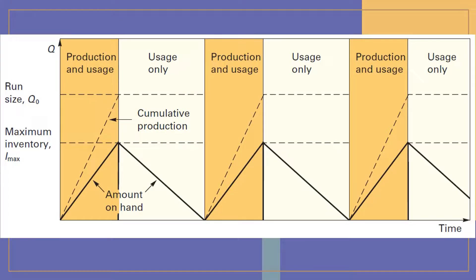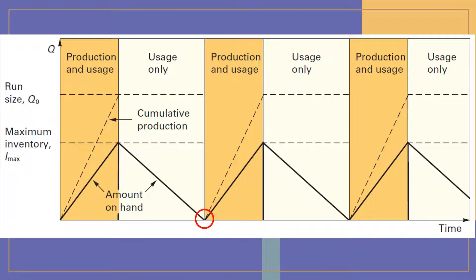This figure illustrates how inventory is affected by periodically producing a batch of a particular item. During the production phase of the cycle, inventory builds up at a rate equal to the difference between production and usage rates. For example, if the daily production rate is 20 units and the daily usage rate is 5 units, inventory will build up at a rate of 20 minus 5 equals 15 units per day. As long as production occurs, the inventory level will continue to build. When production ceases, the inventory level will begin to decrease, reaching its maximum at the point where production ceases. When the inventory on hand is exhausted, production is resumed and the cycle repeats itself.